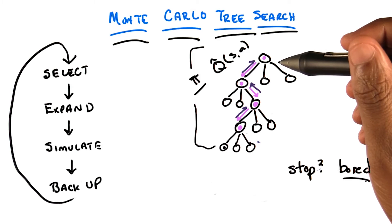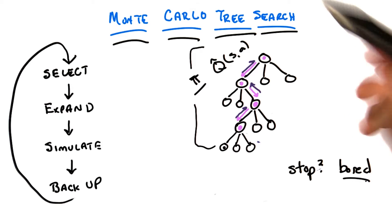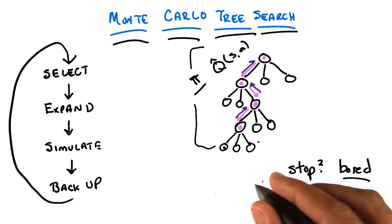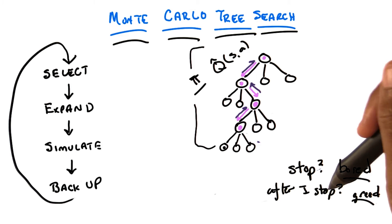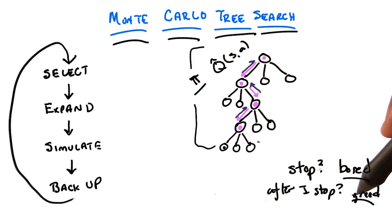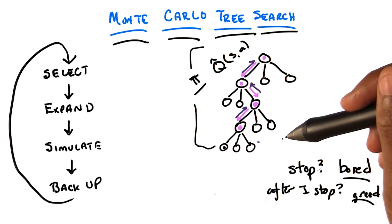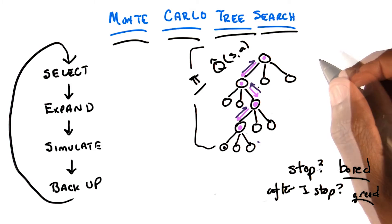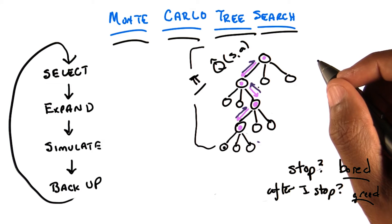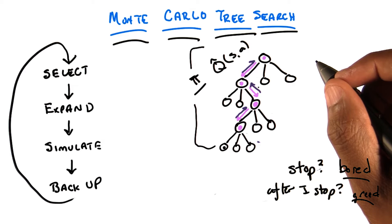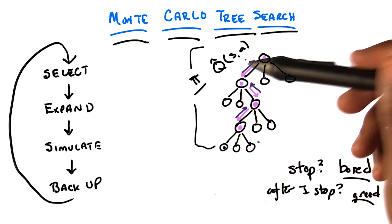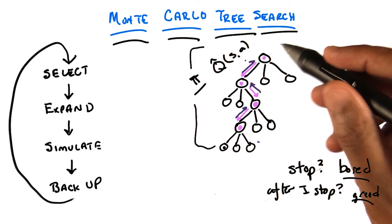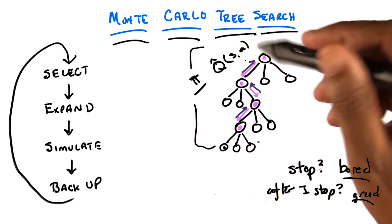And what do you do when you stop? Once you stop, you execute — you do a one-step policy based upon what you've learned, and then you throw it all away and do it all over again. So you take an actual step in the world using the policy — the whole chain you figured out? Well, you could, and you can actually do any number of things there.